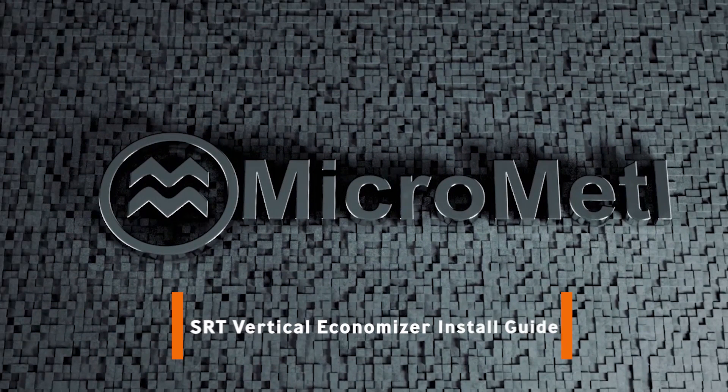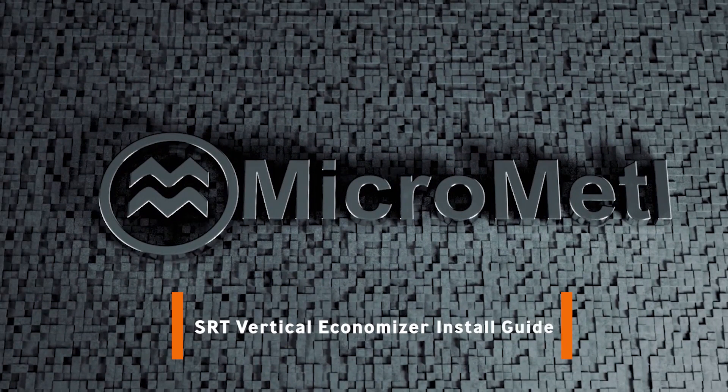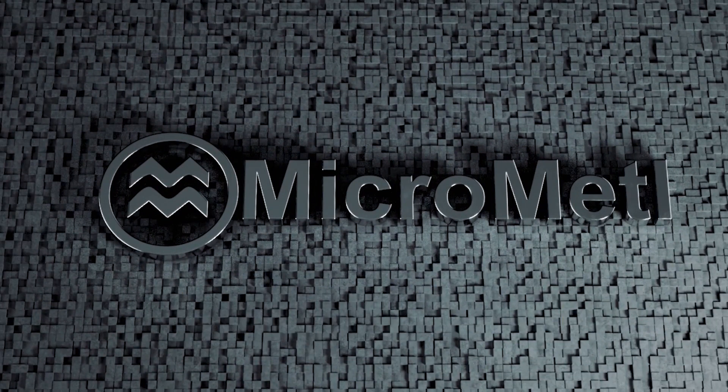This video is a condensed demonstration of an ultra low leak vertical economizer installed on a Carrier, Bryant, or ICP unit with a vane axial fan.